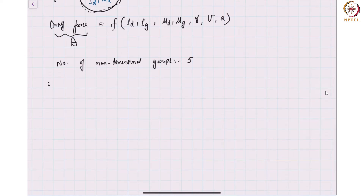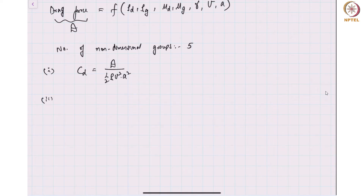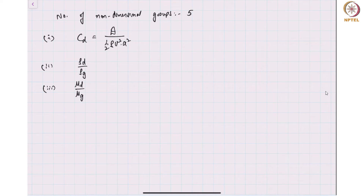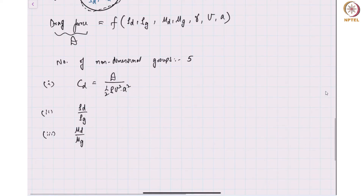Now I can straight away guess a few non-dimensional groups. I could think of a drag coefficient — something like the drag to half rho u squared times a squared. I could think of very simple non-dimensional groups such as the density ratio. I could think of another one which is the viscosity ratio — the ratio of the droplet to the surrounding viscosity. Now I want to determine what are the other non-dimensional groups.